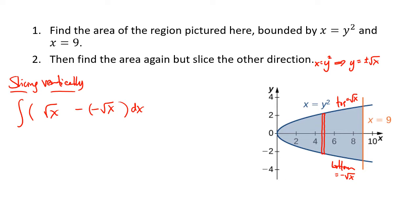For the bounds on the integral, the left bound is the leftmost x value of the region and the right bound is the rightmost x value. The area starts at the origin (0, 0) and ends at x equals 9, which means we're integrating from 0 to 9.